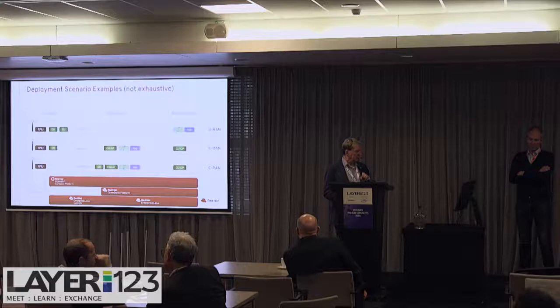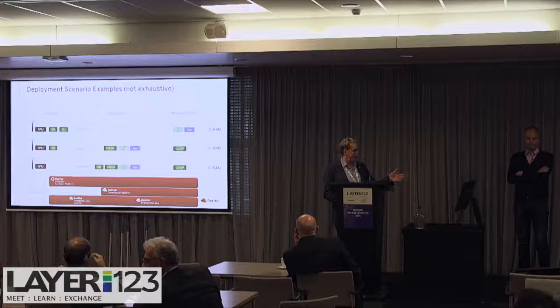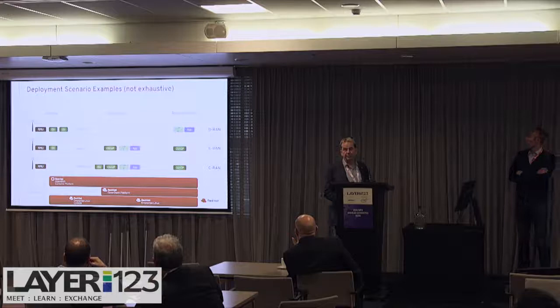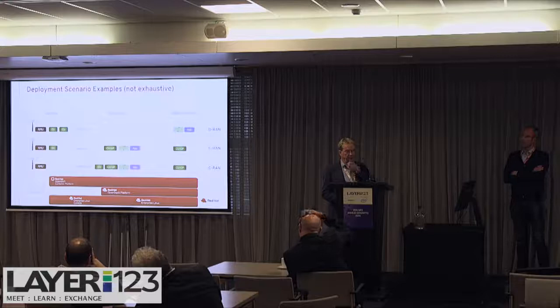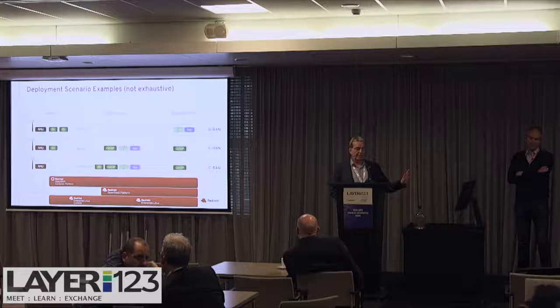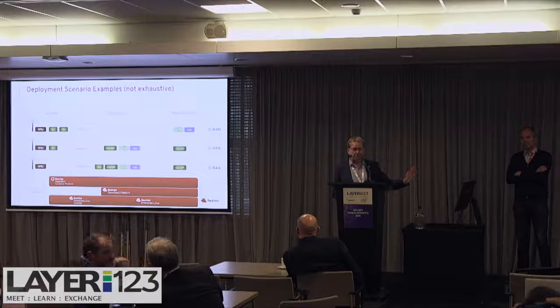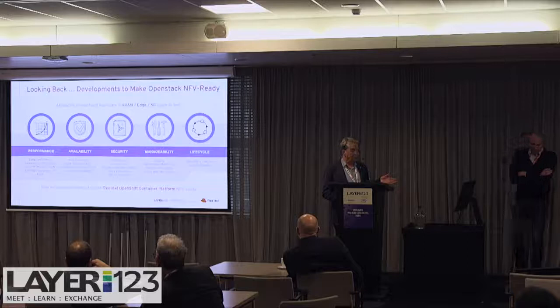On deployment models: with the DU-CU entity division you can relocate those functionalities in different places in the network depending on your connectivity characteristics. Red Hat Enterprise Linux, Red Hat CoreOS (acquired with the CoreOS acquisition), Red Hat OpenStack Platform, and Red Hat OpenShift Platform can be used in any of these places — except on the remote radio itself, which is too deeply embedded. Everything after the antenna side is covered.